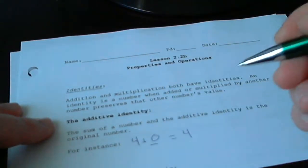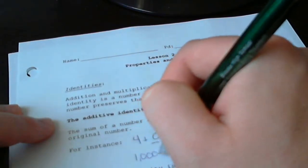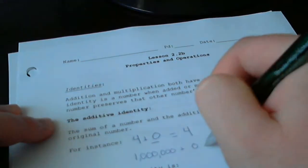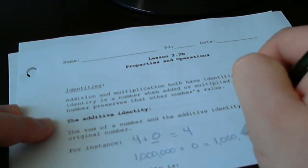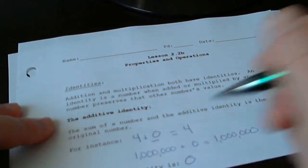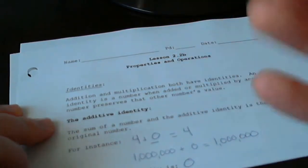4 plus 0 is 4. Just like we could do 1 million plus 0 and get 1 million back. So the additive identity is 0. That's the number we can add to anything and get that anything back.